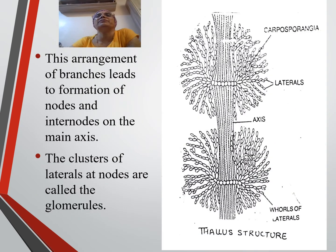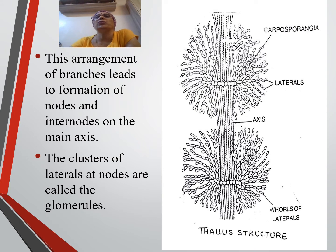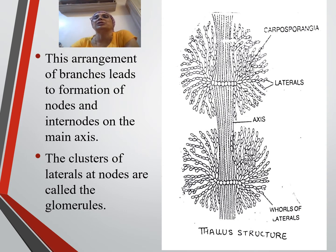Now observe the picture properly — it is slightly magnified. You can see the glomerule-like structure here. This arrangement of branches leads to the formation of nodes and internodes. On the main axis you can see nodes and internodes. The cluster of laterals at nodes are called the glomerules. It looks like the glomerule you have seen in the TS of the kidney — the Bowman's capsule — that type of structure we call a glomerule. It looks the same.